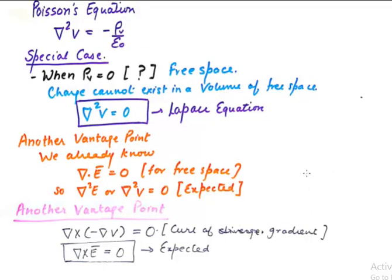Here I would like to discuss another vantage point. If we take curl of gradient of v which was our starting point that will become 0 because curl of a gradient is 0 and which is also expected. We never see E to be curling and that is the reason why voltage is not a curling vector at all.